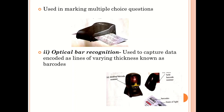Then we have what you call Optical Bar Recognition, which is mainly used to capture data encoded as lines of varying thickness — what we call the barcode. You can see here an example of a barcode and a barcode reader machine. There is a handheld version and a desktop version. When you go to the supermarket, that is the machine they use to bill the products that you want to purchase.